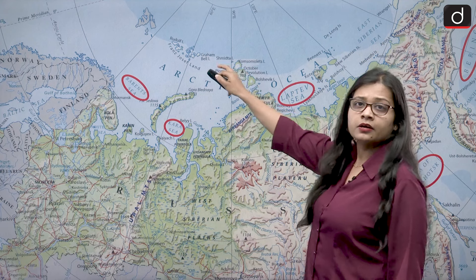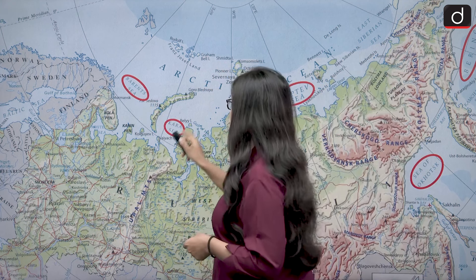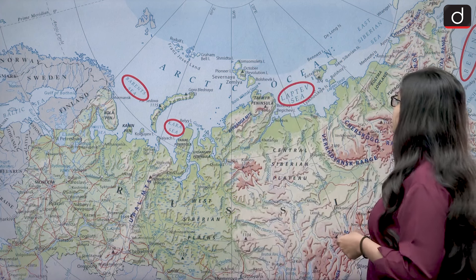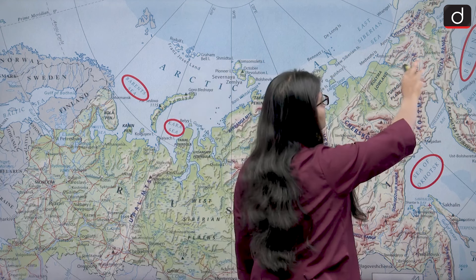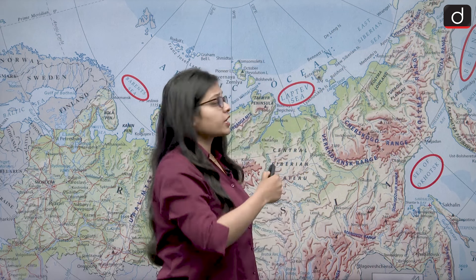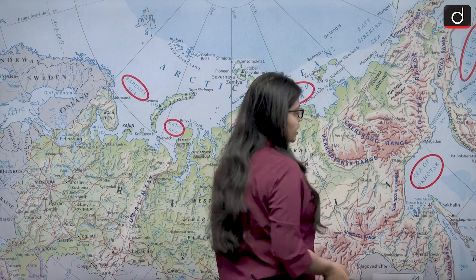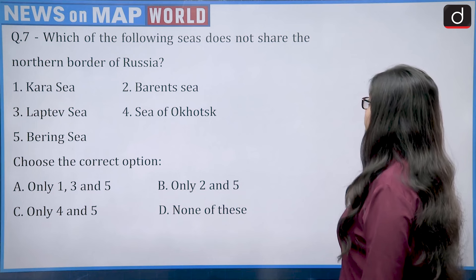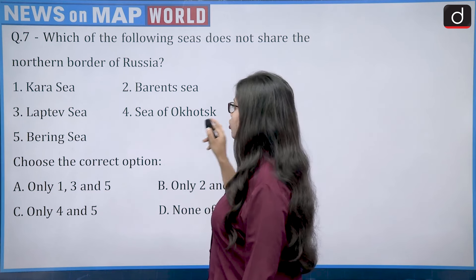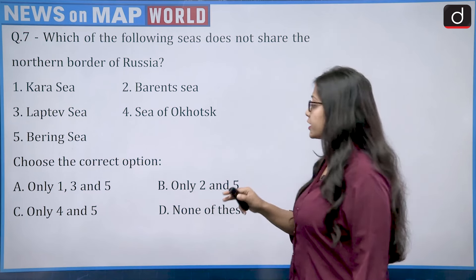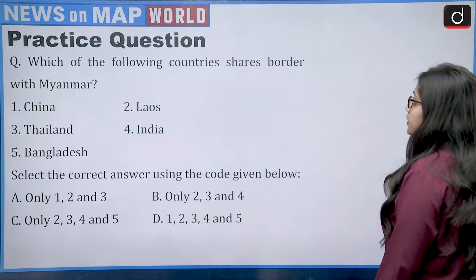Russia is the largest country in the world by size. On its northern side it borders the Barents Sea, the Kara Sea, and the Laptev Sea — all along the Arctic Ocean. However, the Bering Sea lies to the eastern side of Russia, not the north, and the Sea of Okhotsk also lies to the eastern side. So both the Sea of Okhotsk and the Bering Sea do not share Russia's northern border — that is options four and five — making the correct answer Option C.